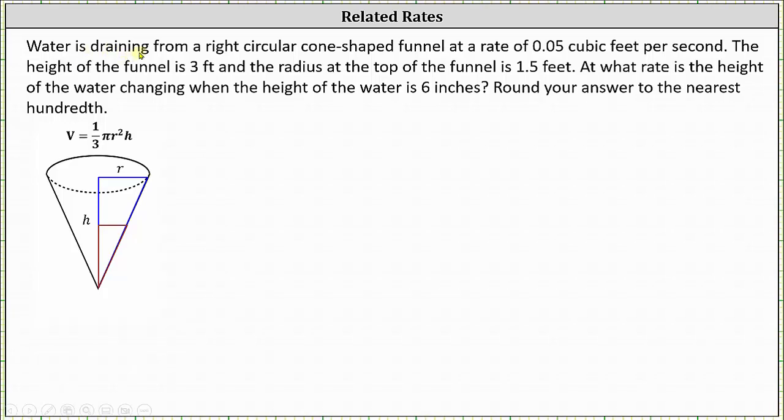Water is draining from a right circular cone-shaped funnel at a rate of 0.05 cubic feet per second. The height of the funnel is three feet, and the radius at the top of the funnel is 1.5 feet. At what rate is the height of the water changing when the height of the water is six inches? We're told to round to the nearest hundredth or two decimal places.